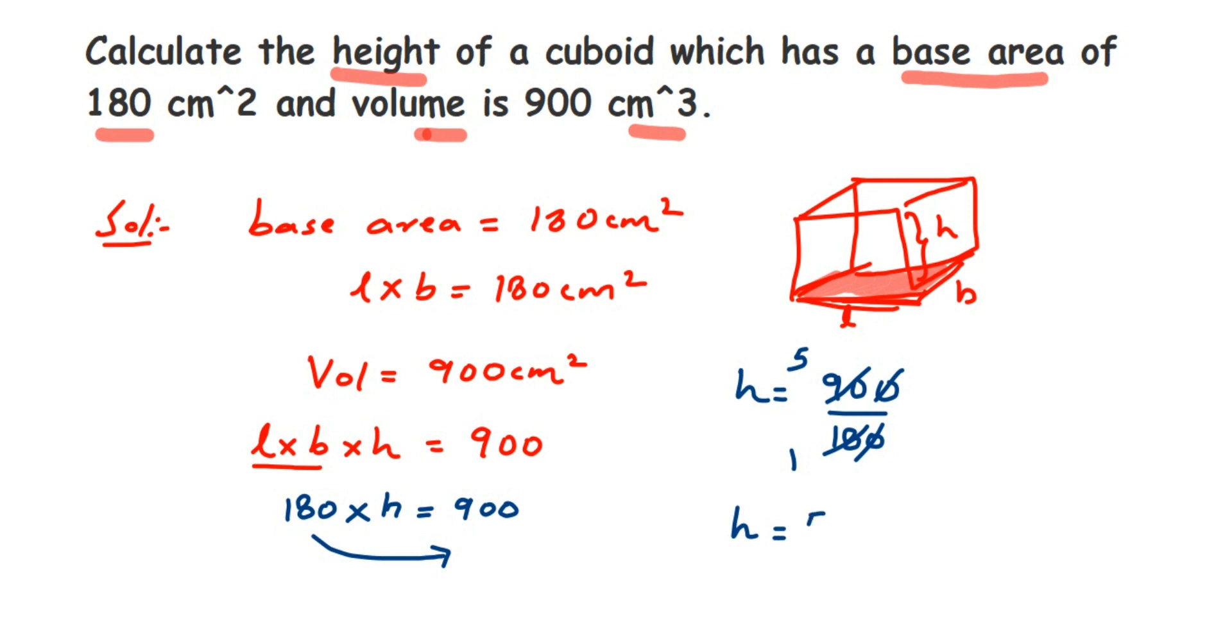Now it will be centimeter because we had 900 centimeter cube and it was 180 centimeter square. So from cube, the square will get cancelled, so only one centimeter will be left. And moreover, height is one dimension, so it will have only one centimeter. That's it, so height is 5 centimeter. I hope this question is clear. In case you have any other question or doubt, you can drop a comment. Thank you so much for watching.